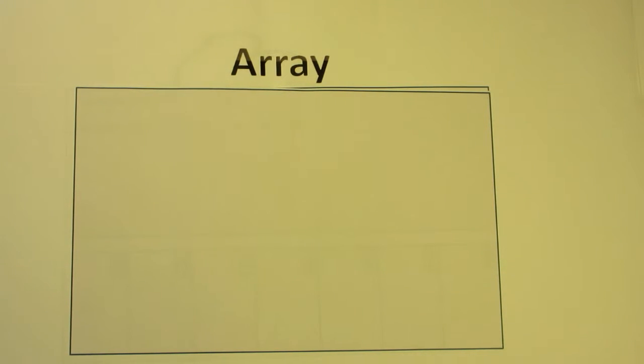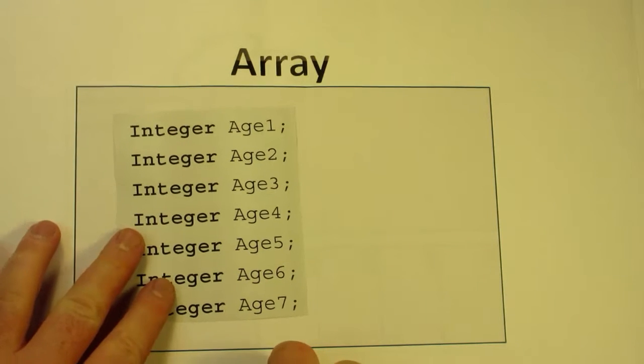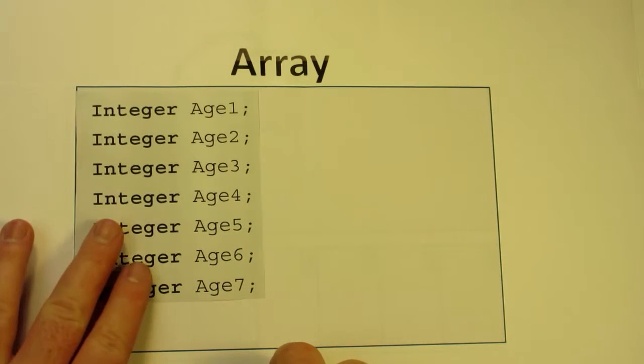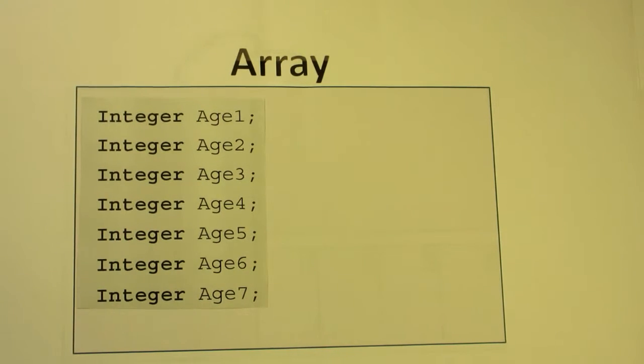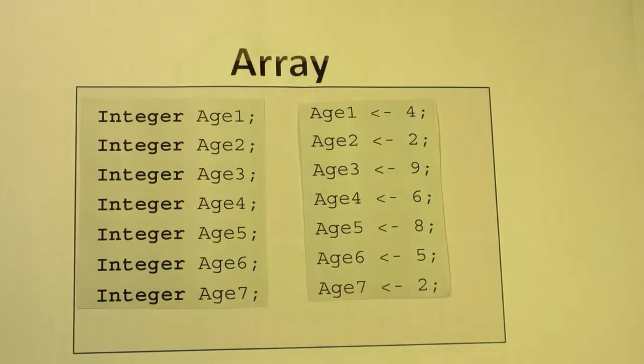Let's say we had to record the age of everybody in the class. The only way we could do it up till now is to declare each variable to represent the age of everybody in the class, and then if we wanted to give them a value, we'd have to assign them like this. That's okay, but that's the old way of doing things.